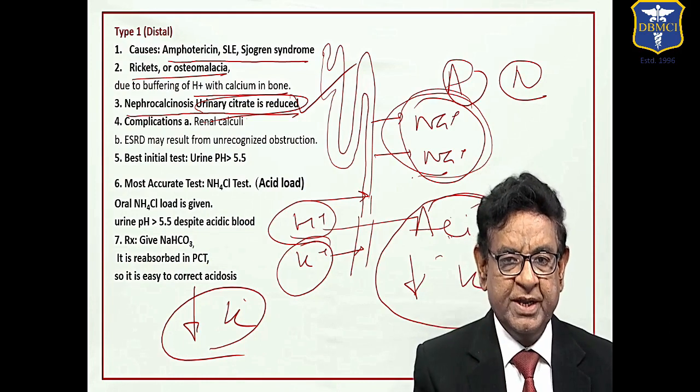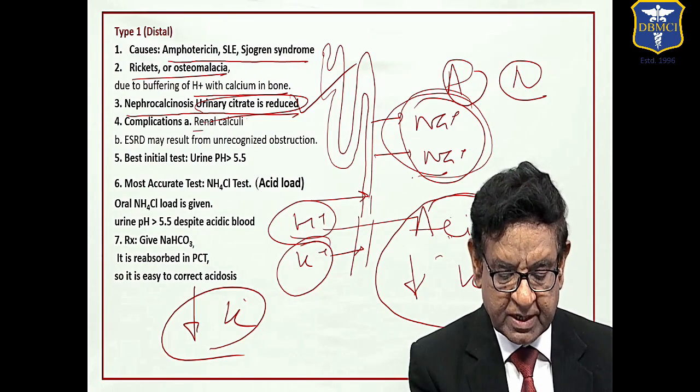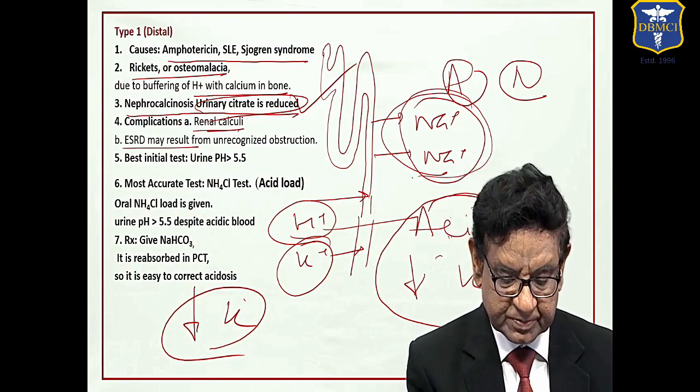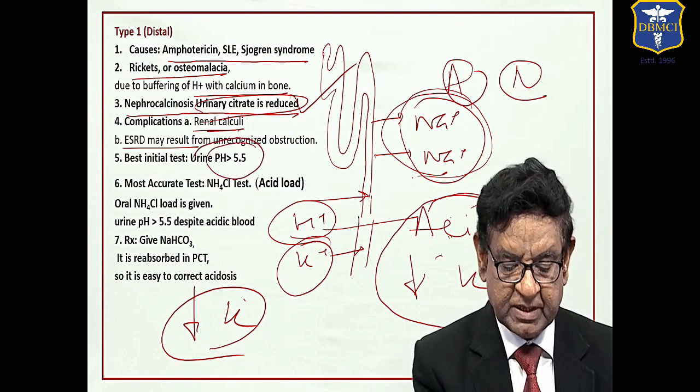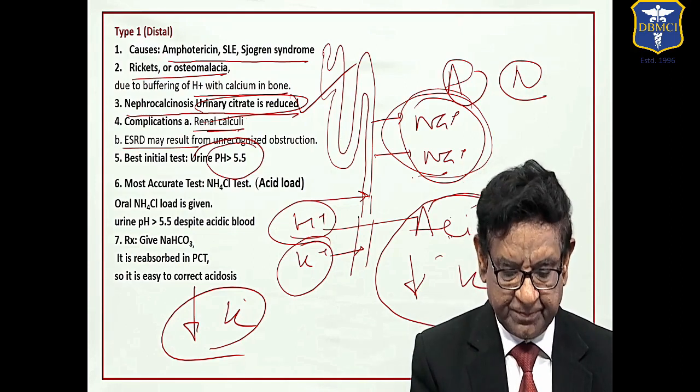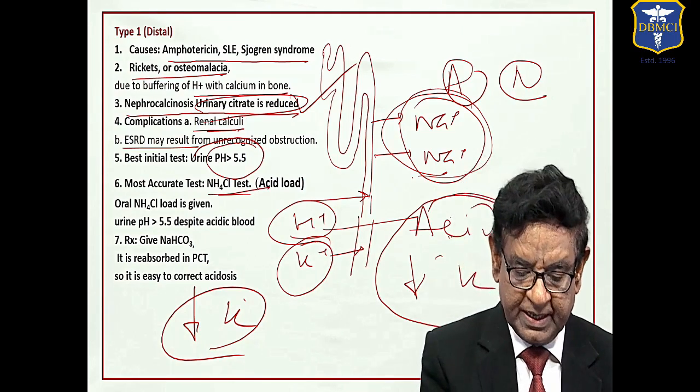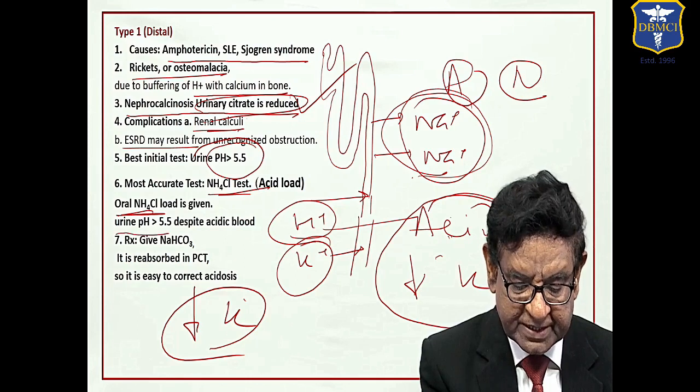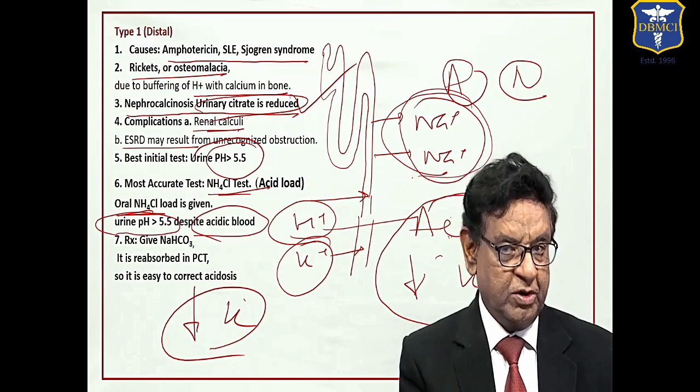Remember, in type 2 RTA urinary citrate was normal, so there was no stone formation. Complication: it can lead to renal calculi which can block the tubule, which can lead to end stage renal disease. And one more thing: as H ion is not coming in the urine, the urine pH always remains more than 5.5, or we can say there is defective acidification of urine. The most accurate test is ammonium chloride test, so called acid load is given. We give oral ammonium chloride but still urine pH remains more than 5.5 despite acidic blood.